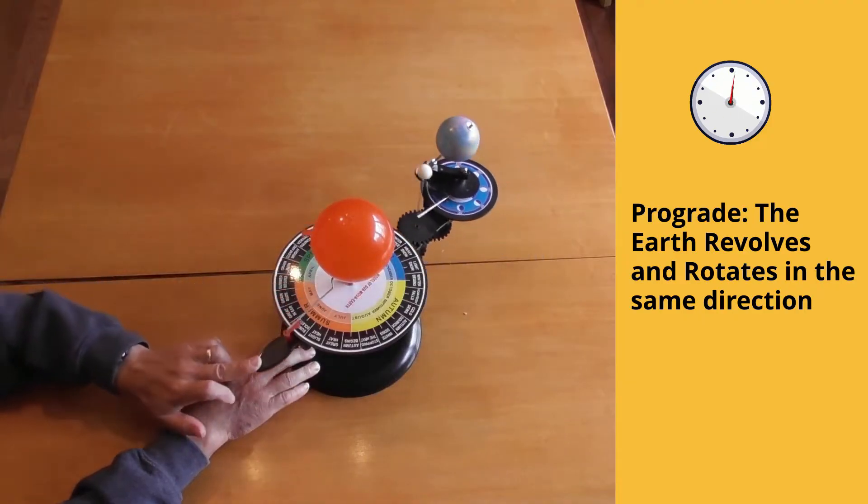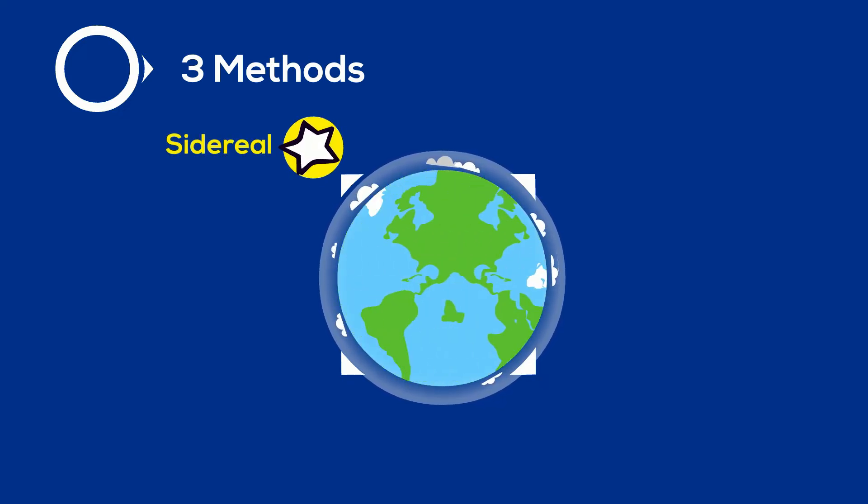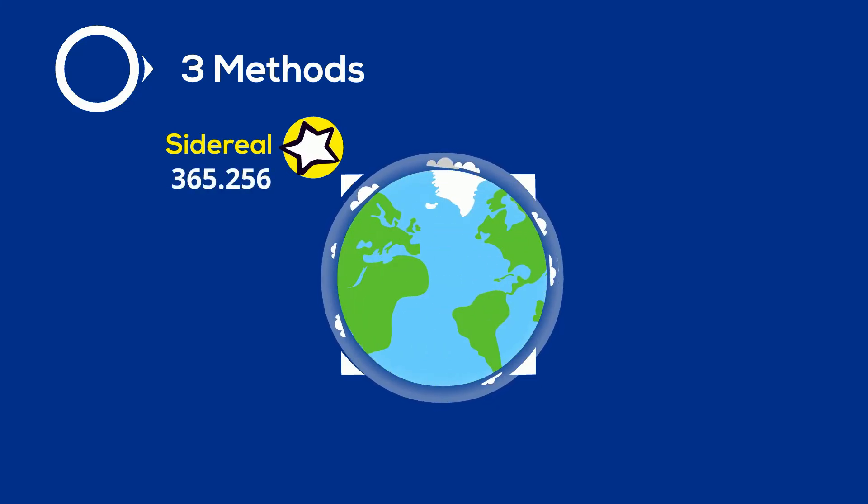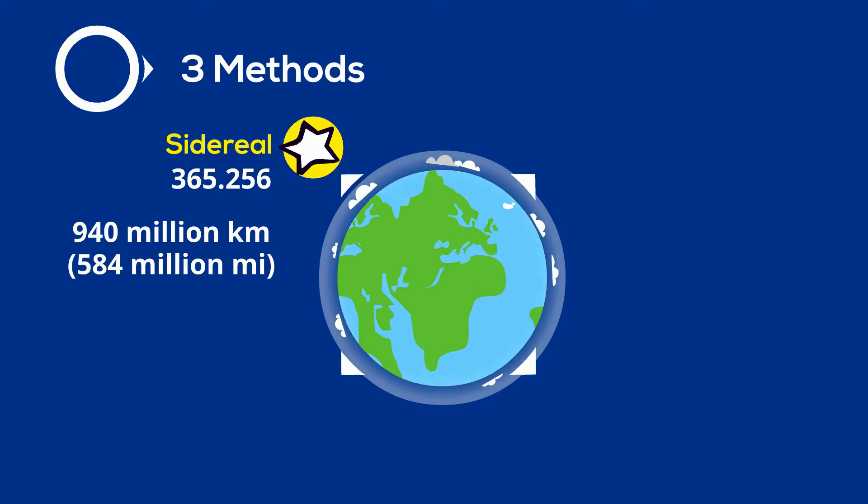There are actually three methods for measuring how long it takes for the Earth to revolve around the Sun. First, there is the sidereal method. One complete orbit takes 365.256 days, during which time the Earth has traveled 940 million kilometers, or 584 million miles. And it measures a complete revolution around the Sun compared to the stars behind the Earth.